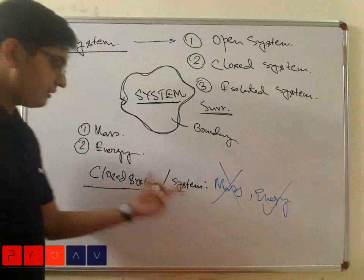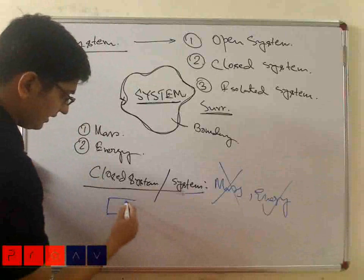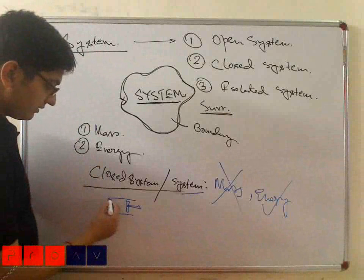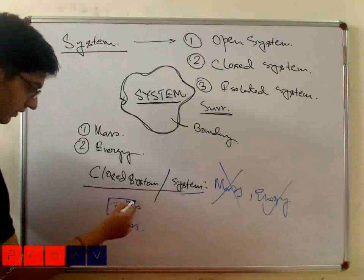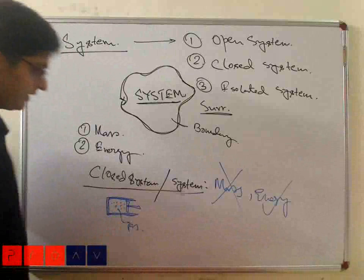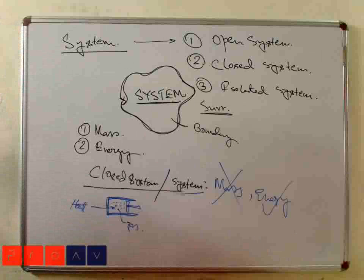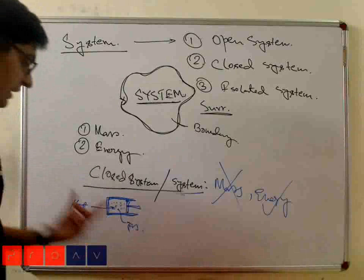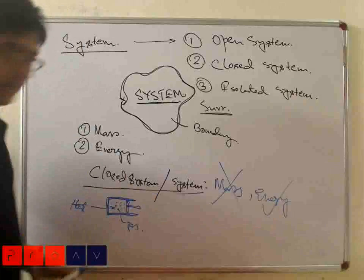In a closed system — sometimes simply called 'system' — mass cannot transfer but energy can. For example, consider a piston-cylinder arrangement with some gas inside. If the cylinder is not insulated, heat can transfer from the surroundings to the gas. But due to the leak-proof arrangement, mass cannot transfer. So this system is analyzed as a closed system.